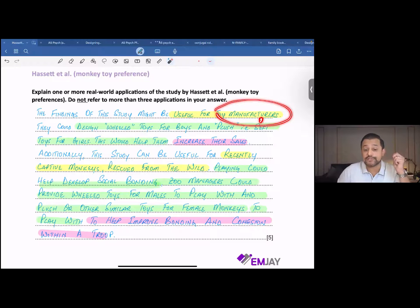Now, the findings of the study must be useful for toy manufacturers. They could design wheel toys for boys and plush toys for girls, that is soft toys for girls. This would help them increase their sales. So, that's the first point.